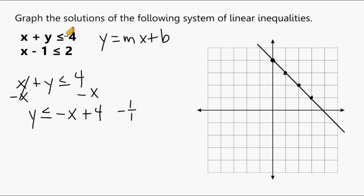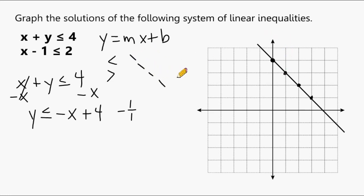Because our inequality symbols both have an equal-to component, we draw a solid line. If the inequality were strictly less than or greater than — with no equal to — we would draw a dotted line, indicating that points on that line are not included as solutions. With an equal-to symbol, any point on the line is a possible solution.